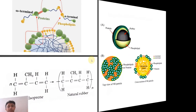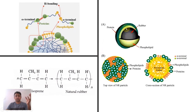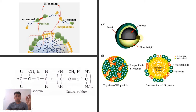Natural rubber is a polymer — 1,4-cis-polyisoprene — available in rubber particles. The cis-polyisoprene is inside the rubber particle, covered with a phospholipid layer adjacent to the rubber. The most outer cover of the rubber particle is protein. This is the structure: phospholipids form an inner layer and protein forms the outer layer.